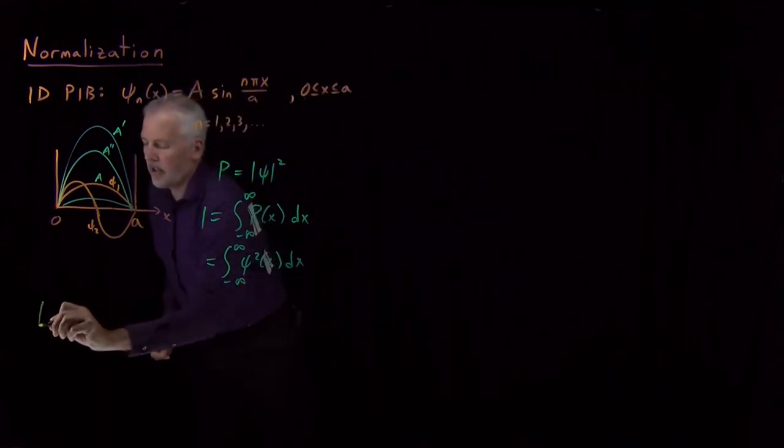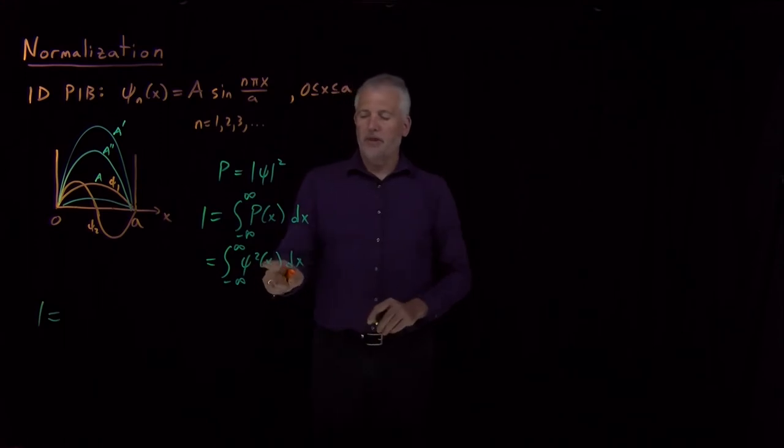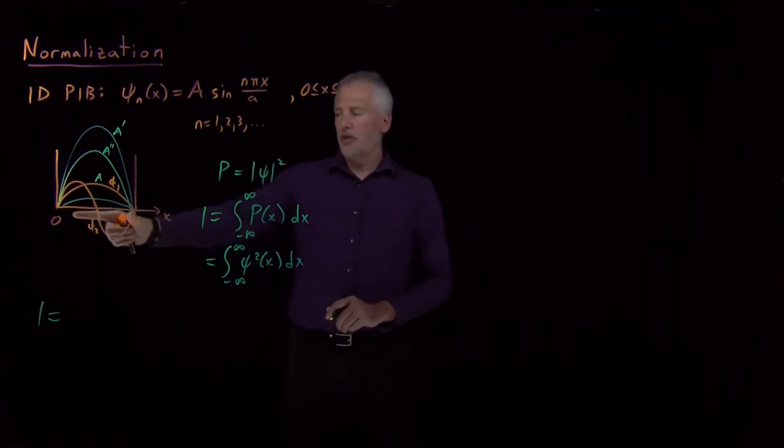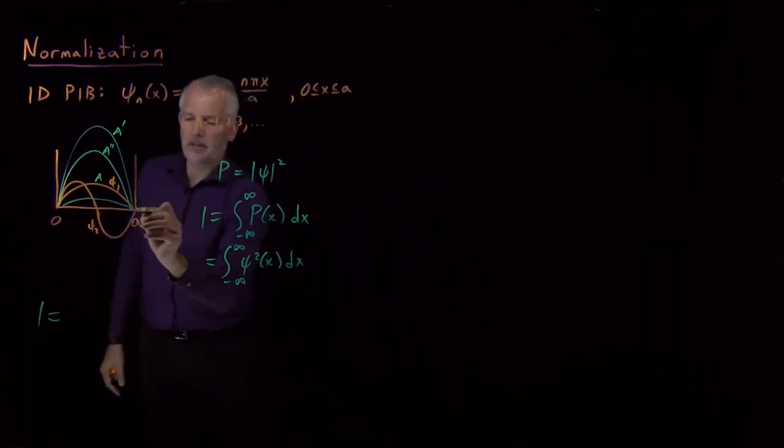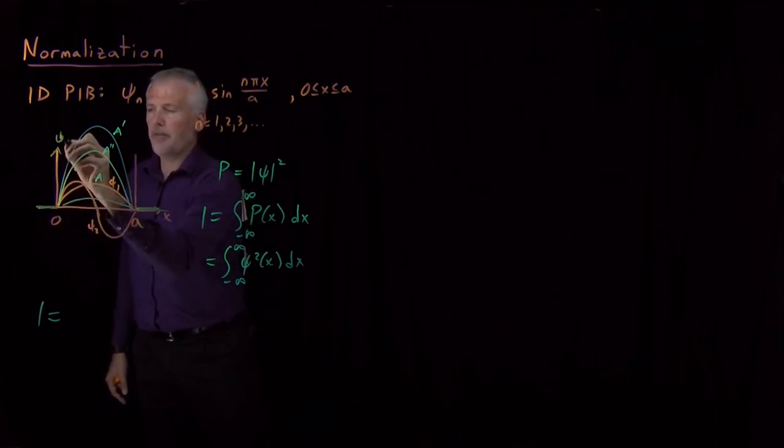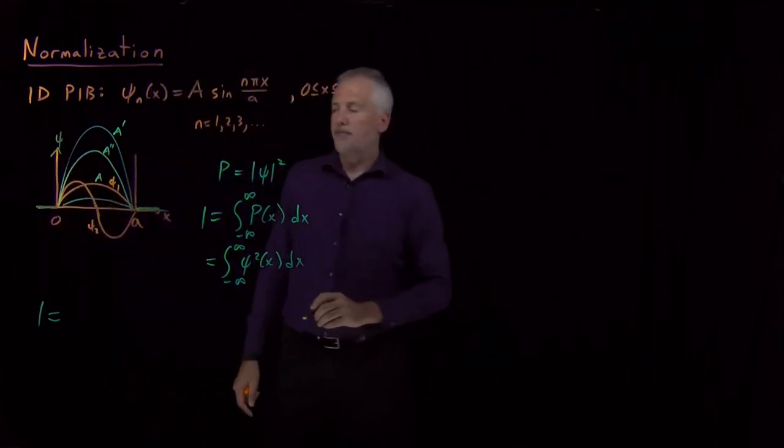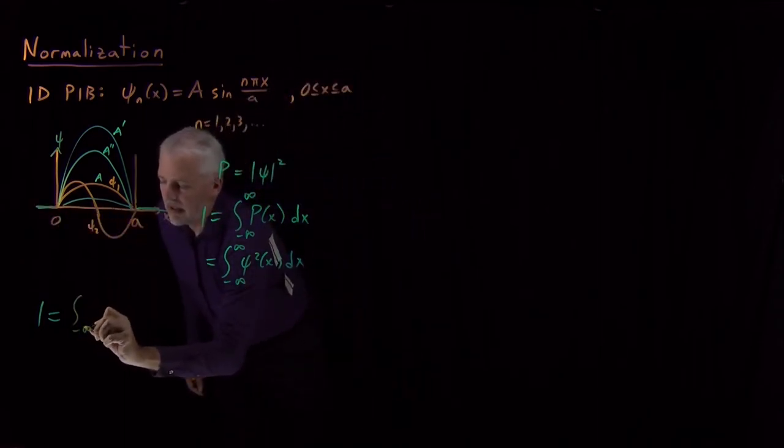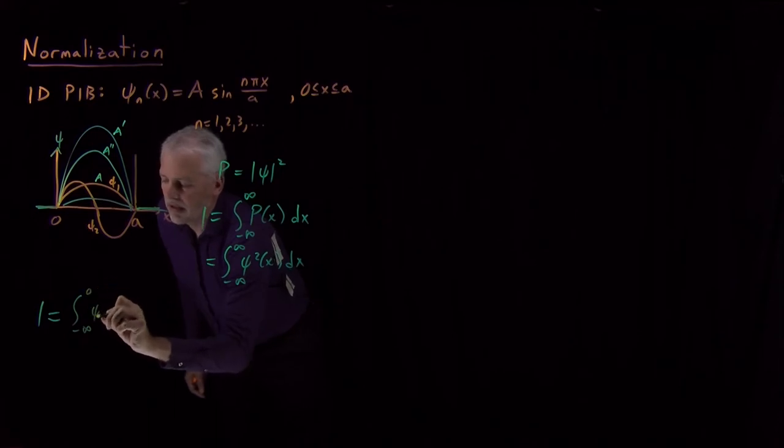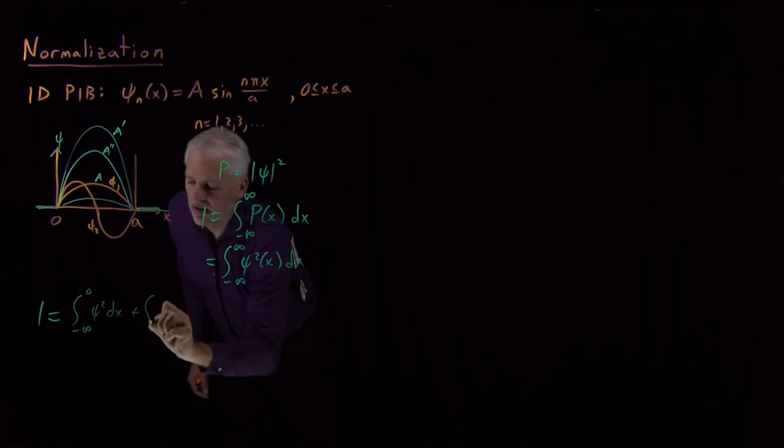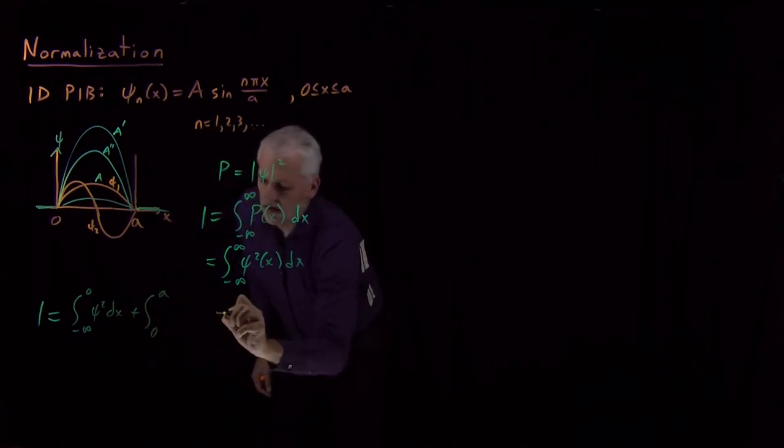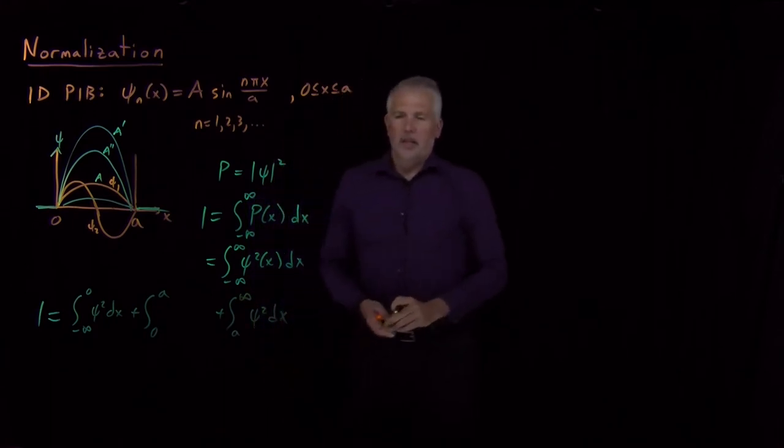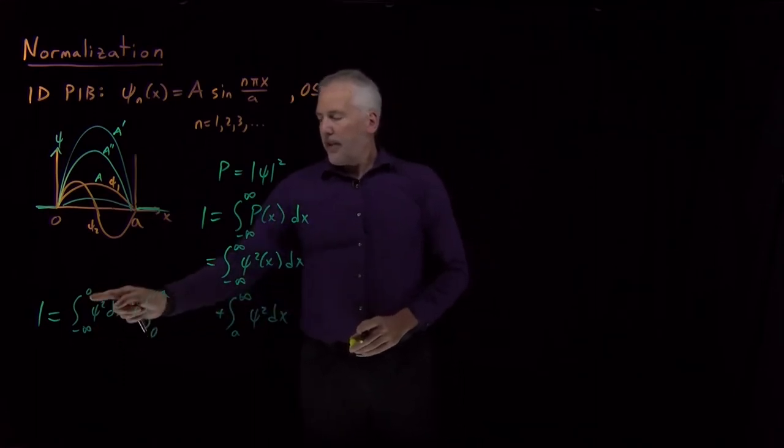Let's see what that looks like. I want to require that one equals the integral of wave function squared from negative infinity to infinity. The wave function looks like this in the place we're interested in, inside the box. Outside the box, the wave function is just zero. This wave function that I'm plotting is zero outside the box. So I can break the integral up into three pieces.